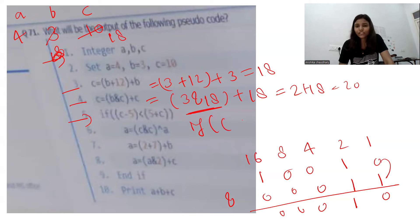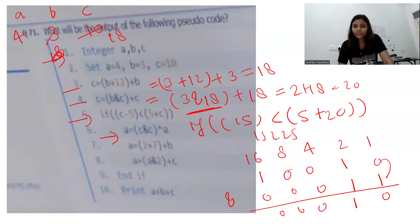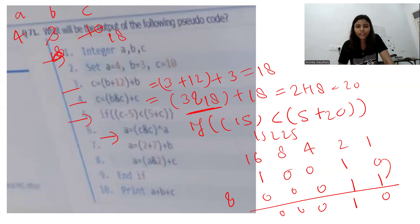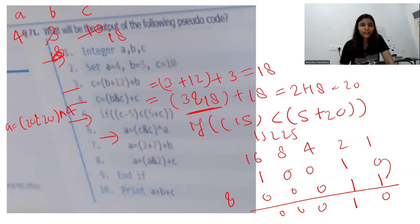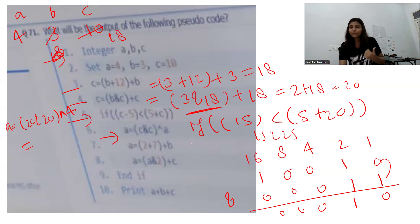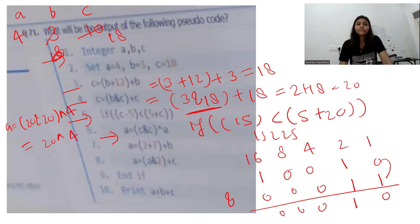Now we check the if condition: c minus 5 is 20 minus 5 which is 15, is less than 5 plus c which is 25. Yes, 15 is less than 25, so we enter the if block. Inside we update a using c AND c XOR a. Since c AND c is just 20, we now need 20 XOR 4.